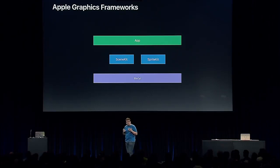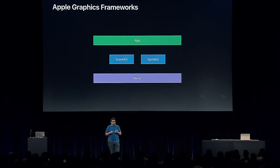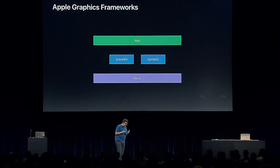SpriteKit sits alongside SceneKit, another games-oriented graphics framework, and both sit on top of Metal. Traditionally, they've all been used separately in different contexts: SpriteKit for quick and easy 2D, SceneKit as a ready-to-use 3D engine, and Metal to give you direct access to your device's rendering hardware. Instead of keeping all three separate, we think it's time that SpriteKit breaks out of its 2D mold.